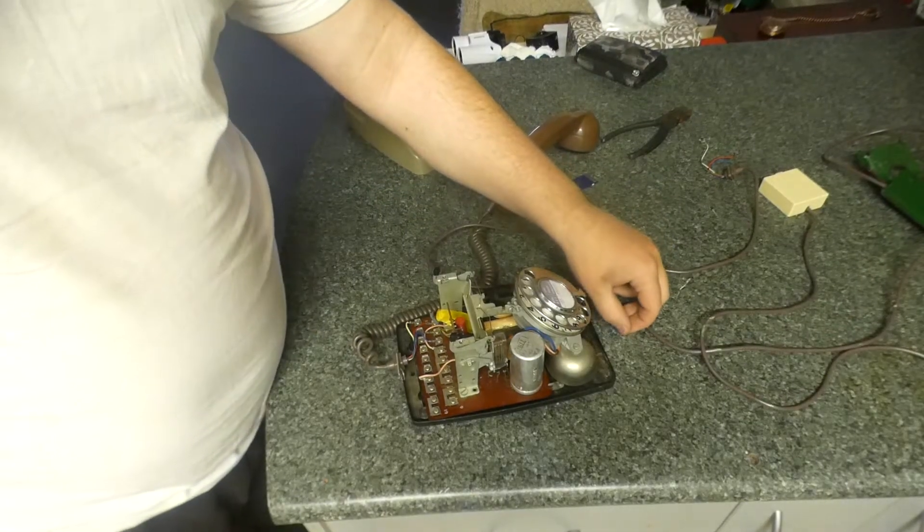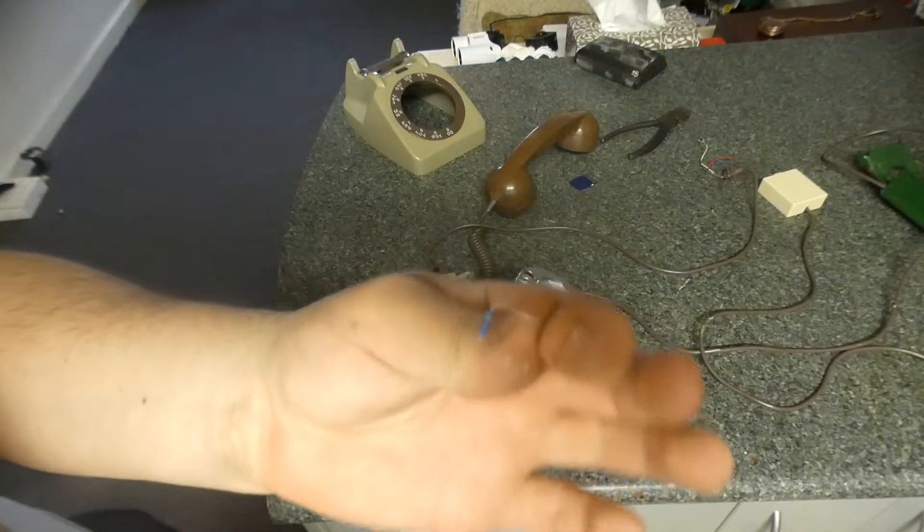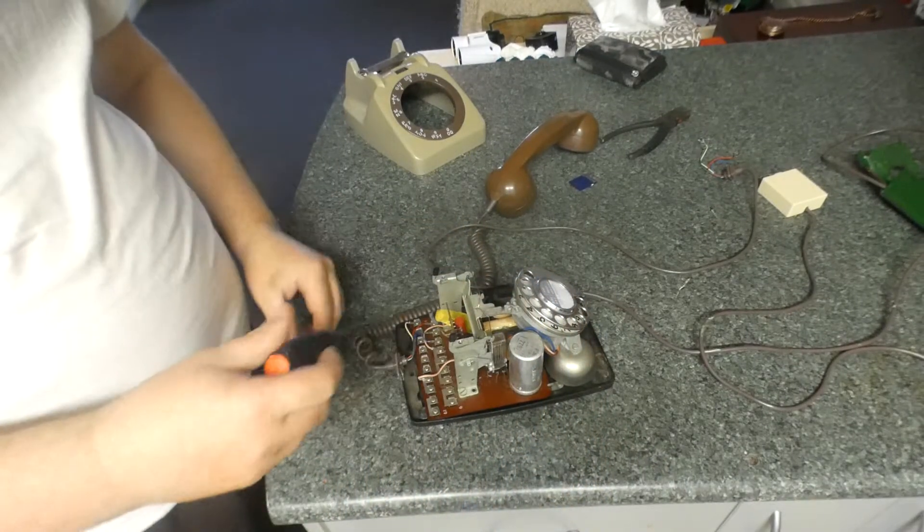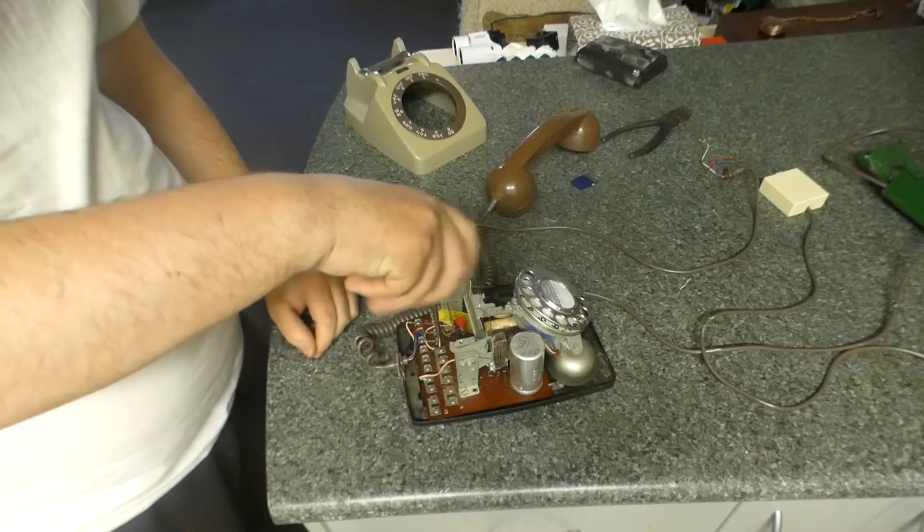It's been called the 3.3 kiloohm resistor. One of these. People will be able to say this is the long cover. This is an Aussie 3.3 ohm resistor.